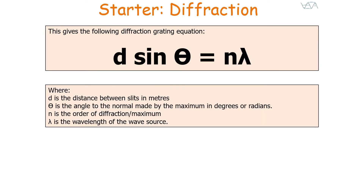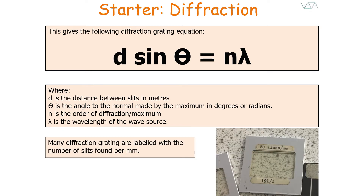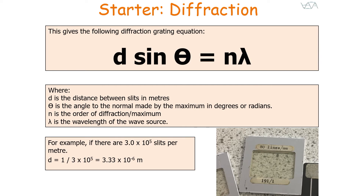Many diffraction gratings are labelled with the number of slits per millimetre. We can convert this into D, the distance between the slits in metres, using D equals 1 over the number of lines per metre. For example, if there are 3×10⁵ slits per metre, then D equals 1 over 3×10⁵, which is 3.33×10⁻⁶ metres.